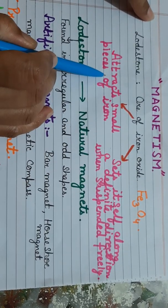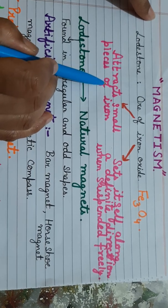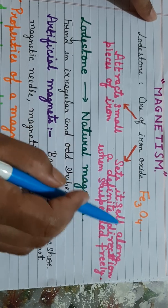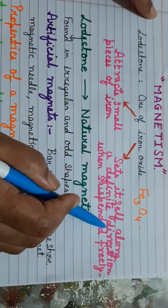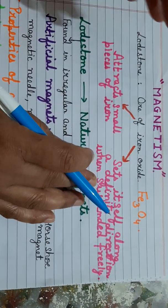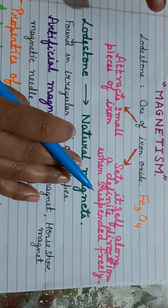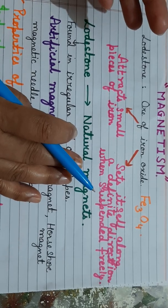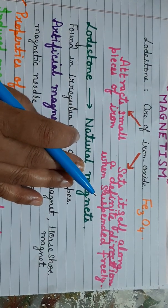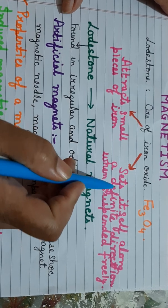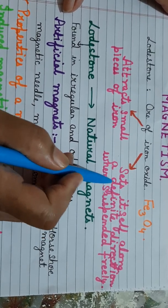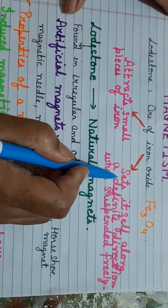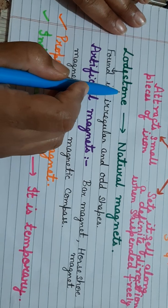The first property is that it attracts small pieces of iron, and secondly a natural magnet sets itself along a definite direction when it is suspended freely. Whenever we suspend a magnet freely it always comes to rest in the north-south direction, such that the north pole faces the geographic north of the earth and the south pole faces the geographic south.